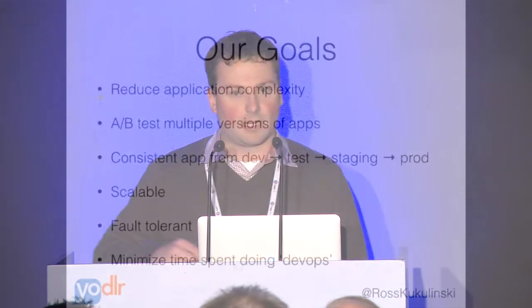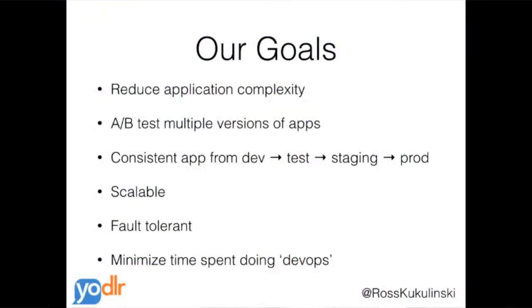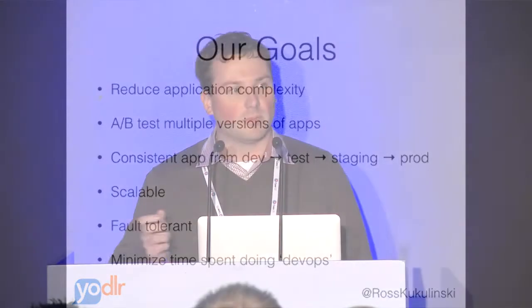It wasn't manageable for us as a small development team to continue to build on top of that. So we decided to go back and revisit our entire application structure. We set out to rebuild our system focusing primarily on these goals: reduce application complexity — we're big proponents of the Unix philosophy, build things that do one thing and one thing well. We also cared very much about A/B testing, to easily run multiple versions of the same application side by side in our infrastructure, so we can measure performance and whether we've actually fixed bugs or memory leaks. And as an ops person, I really wanted to get rid of the problem of 'it worked on my machine.'